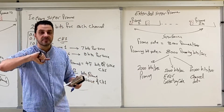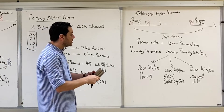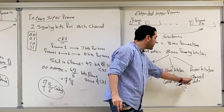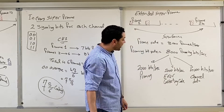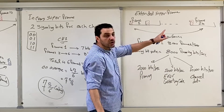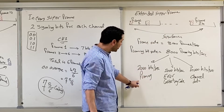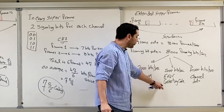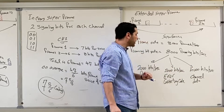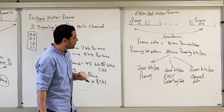So feeding back information about the channel is important, and in the extended super frame this was done using the framing bits. The framing bits were not all used for framing — part was used for framing, another part for error correcting codes, and another part for feedback of channel data information.